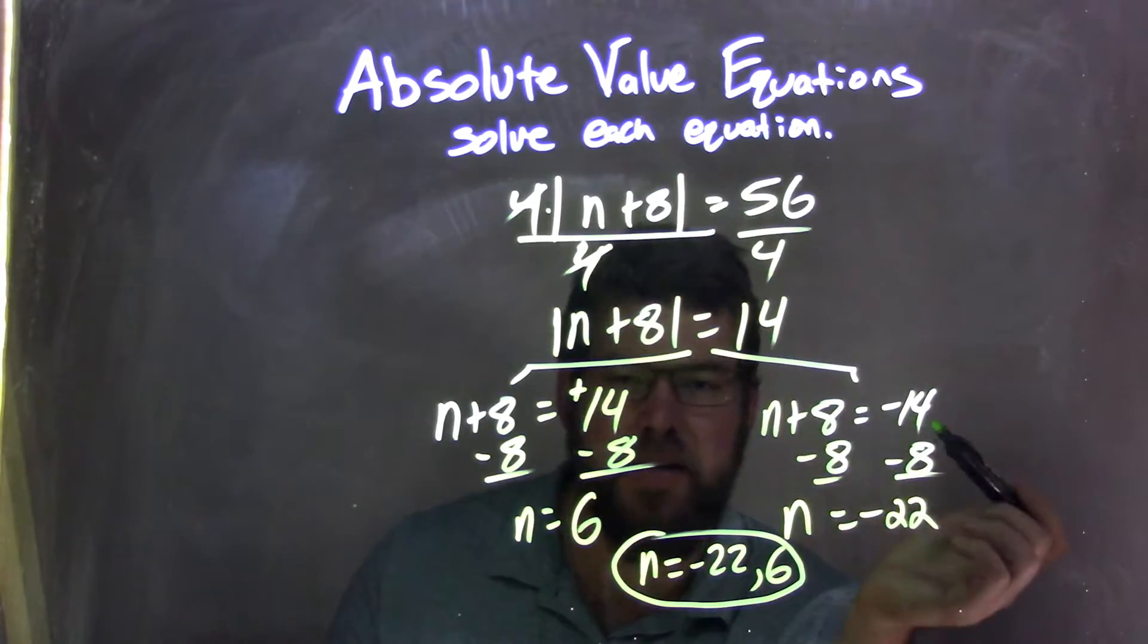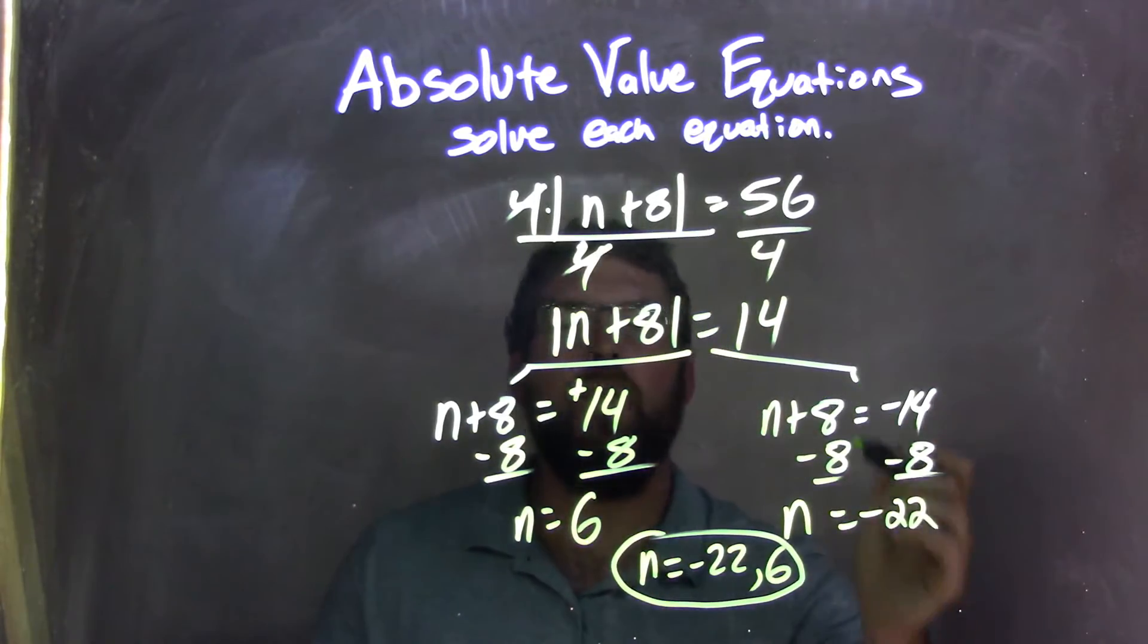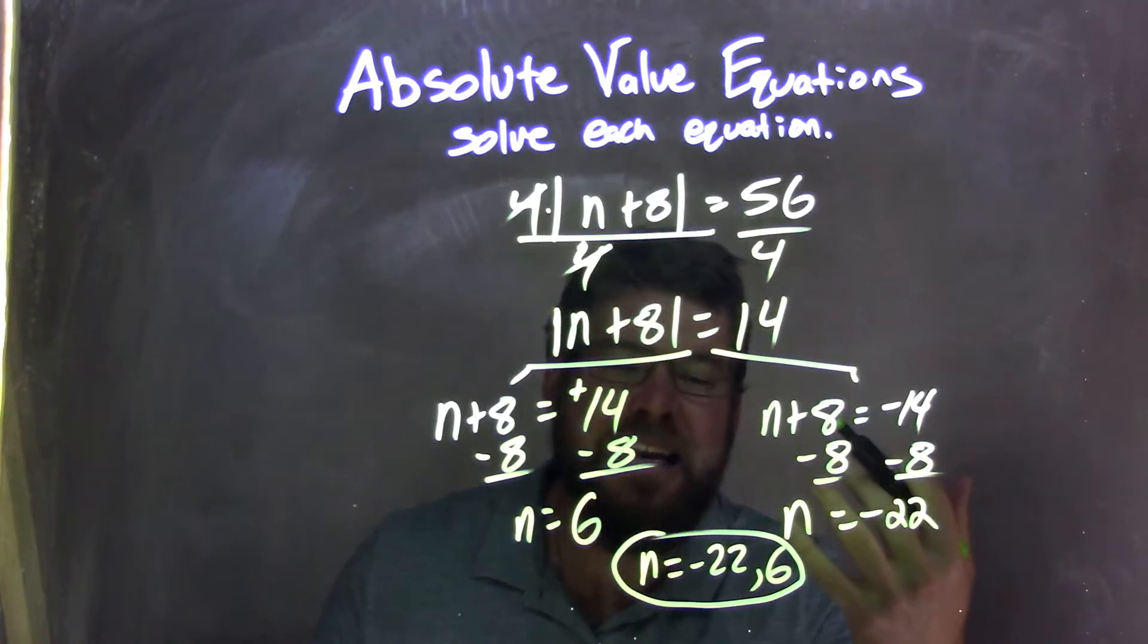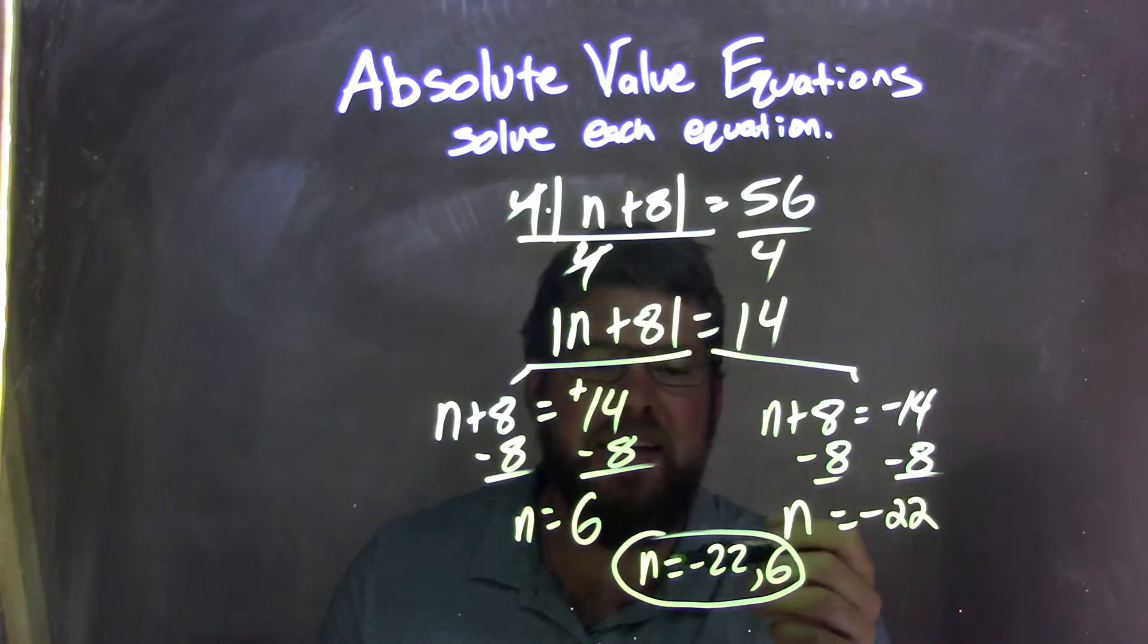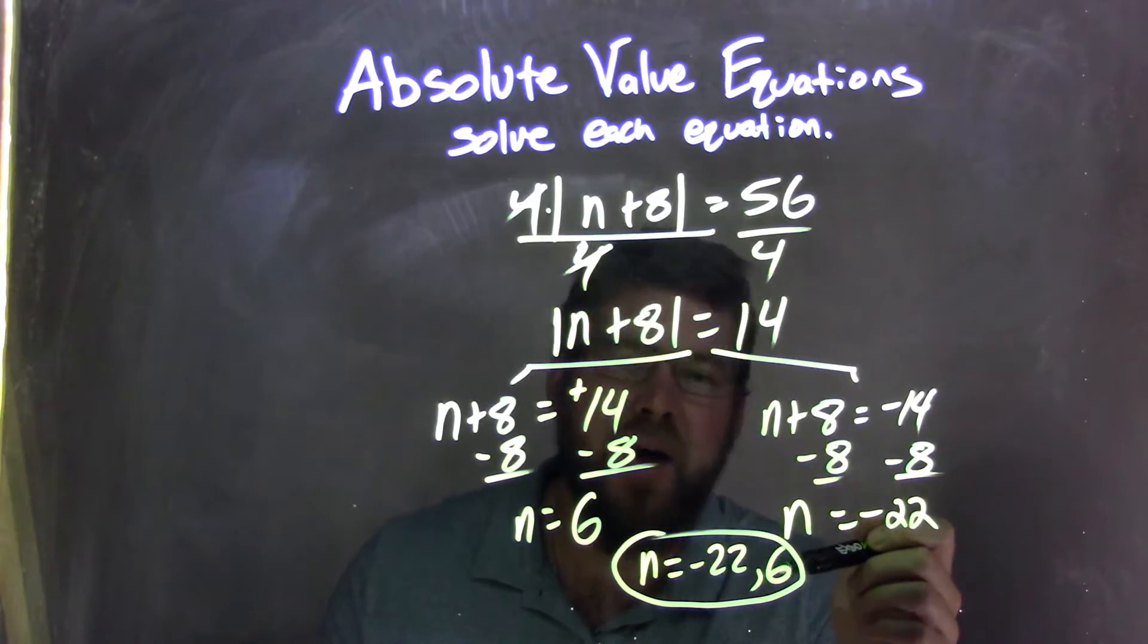Both used the same step, just subtracting 8 from both sides. Now I have my two answers. To write it nice and neatly, I rewrite them from least to greatest, so my final answer is n equals negative 22 and positive 6.